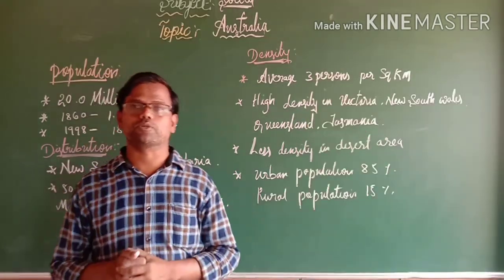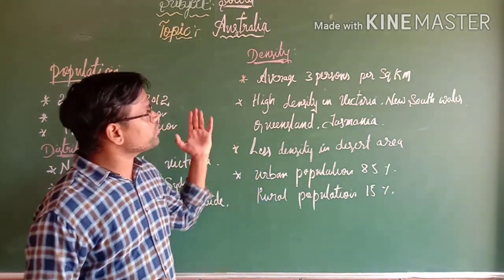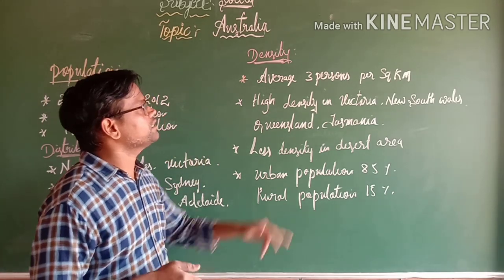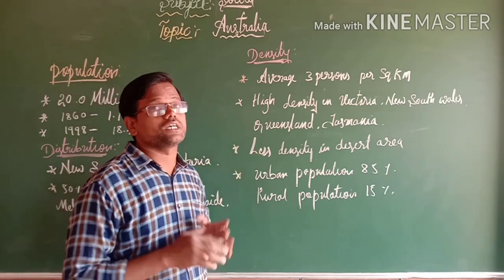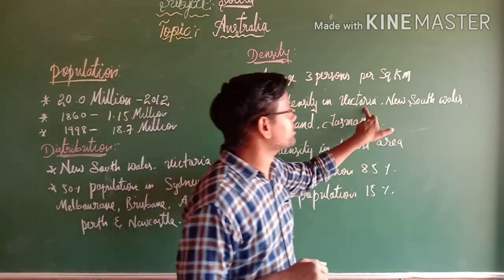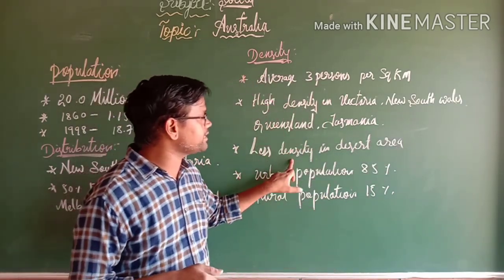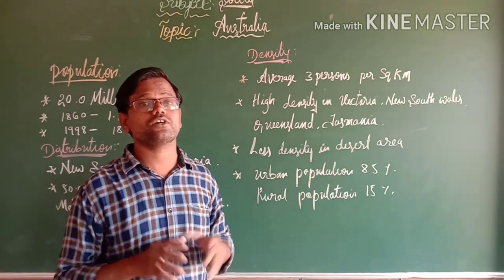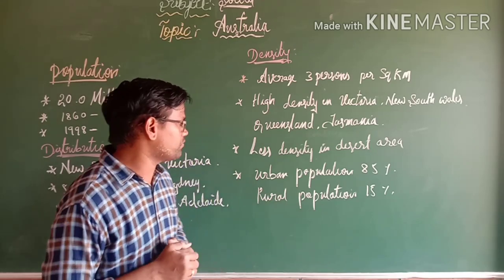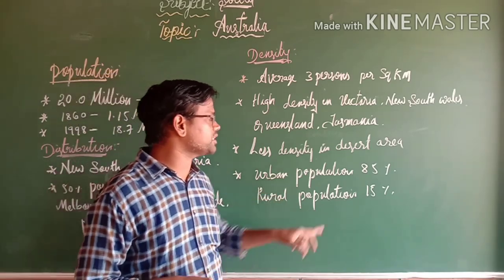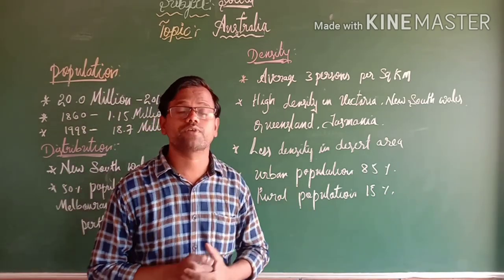Australia has a very low population density of about 3 persons per square kilometer. The highest density is in Victoria, New South Wales, and Tasmania. Less density is found in desert areas as those places are not suitable for living. Urban population accounts for 85 percent and rural population for 15 percent.